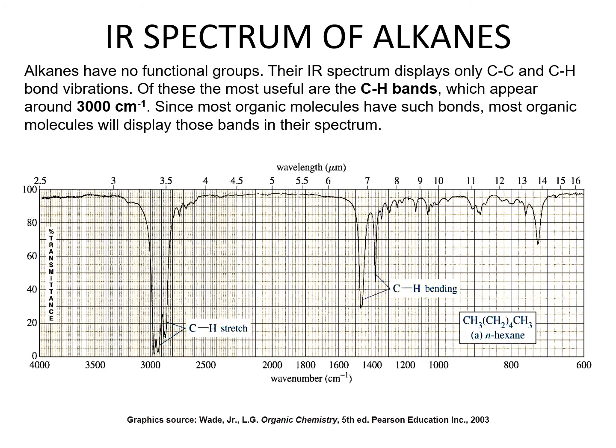Alkanes have no functional groups, so the IR spectrum displays only carbon-carbon and carbon-hydrogen bond vibrations. The most useful are the CH bands, which appear around 3000 centimeters to the minus one. Since most organic molecules have such bonds, most organic molecules will display those bands in their spectrum. A very strong peak around 3000 represents the carbon-hydrogen stretch, and a medium strength signal represents the carbon-hydrogen bending. This spectrum represents hexane.